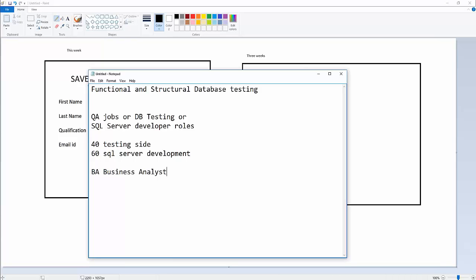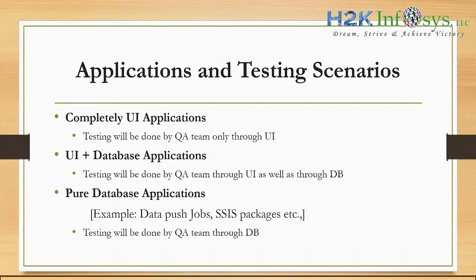There are three types of application testing scenarios. First: complete UI application, where a tester need not worry about the database. Second: UI plus database, where the tester needs knowledge of the database when there are no screens for certain functionality. In that case, the tester has to log into the database and write some queries. Third: pure database applications, where there is no screen at all and all testing must be done from the database.